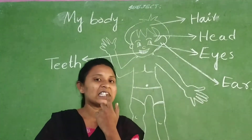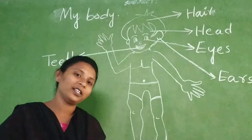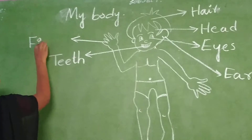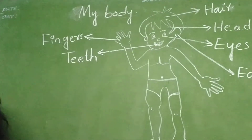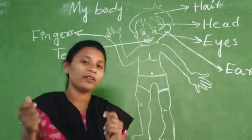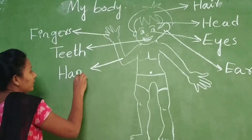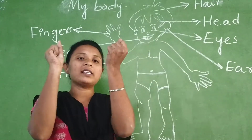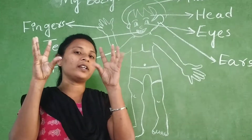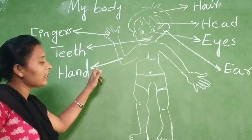Show me your teeth. These are my teeth. Now show me your teeth. These are my fingers. I have two hands — in one hand five fingers, and in another hand five fingers. Total how many fingers are there, children? Ten fingers. These are fingers and this is hand.